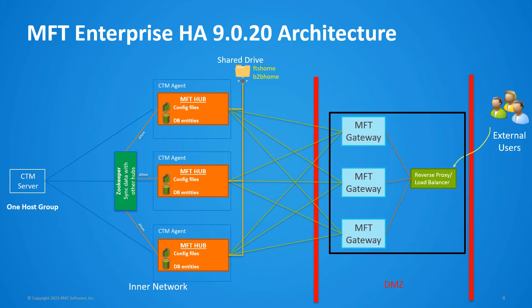Each hub is also aware of all the other hubs in the cluster. Gateways are not aware of each other, and load balancing between the gateways is handled through a load balancer managed by your IT team.